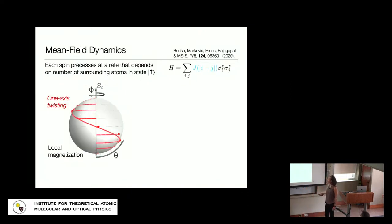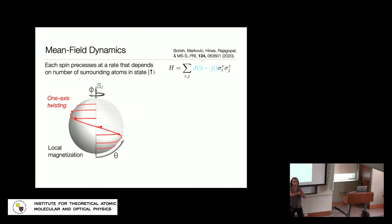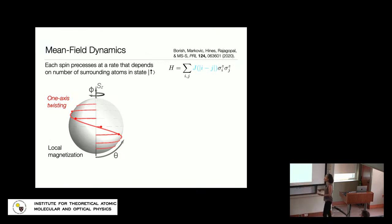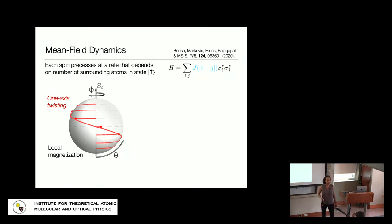In the mean-field picture: a given atom feels a larger light shift if there are more spin-up atoms nearby than if there are fewer. So the local magnetization in a cloud of atoms — if it's higher, the precession rate will be different than if it's lower — and that gives rise to twisting dynamics in the local magnetization of this cloud. You can think of this as a manifestation of Ising interactions between the spins.